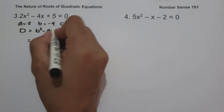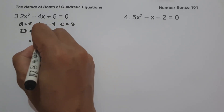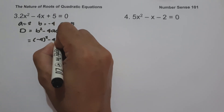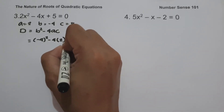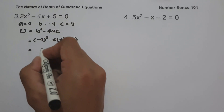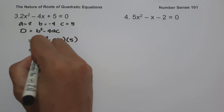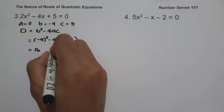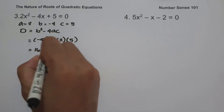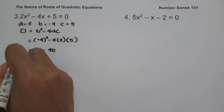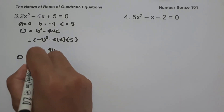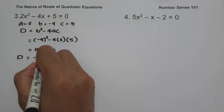The value of b is negative 4, so we are going to have negative 4 squared minus 4 times a, that is 2, and c, which is 5. Negative 4 squared is 16. Negative 4 times 2 is negative 8, and negative 8 times 5 is negative 40. So the value of the discriminant is 16 minus 40, that is negative 24.